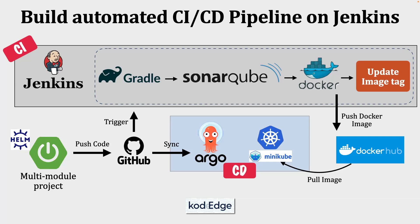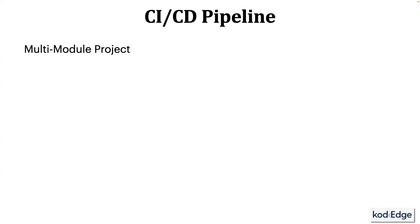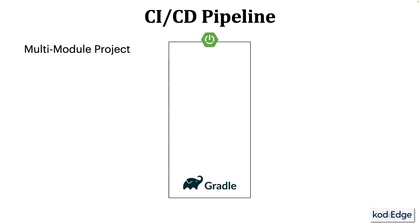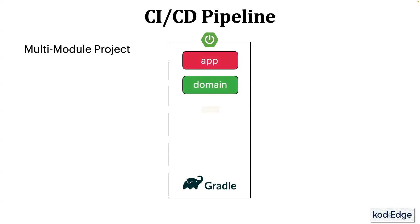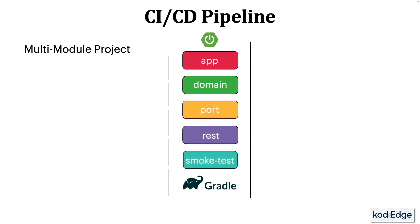Let's first understand the CI/CD setup that we will be building in this demonstration. First, we will create a multi-module project. We will develop a Spring Boot application using the Gradle build system. Next we will add modules like App, Domain, Port, REST and Smoke Test to the project. Don't worry if you are not familiar with these modules, I will explain each of them in detail shortly.